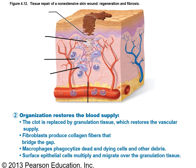Second is organization, which restores the blood supply. The clot is replaced by granulation tissue. Fibroblasts in the area produce collagen fibers that bridge the gap and stitch up the separated areas. Macrophages phagocytize dead and dying cells and other debris, cleaning up the mess. Neutrophils knock out any bacteria that may enter from outside. Then surface epithelial cells multiply and migrate over the granulation tissue, starting to fill in.